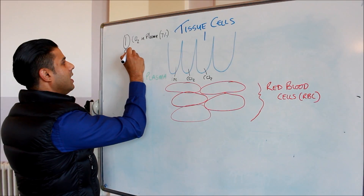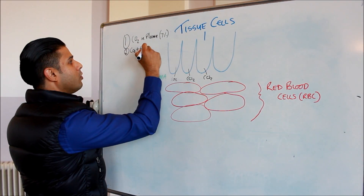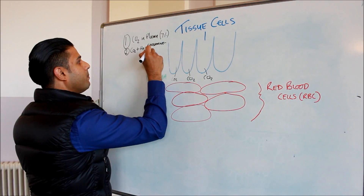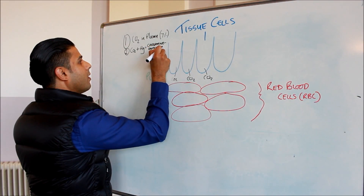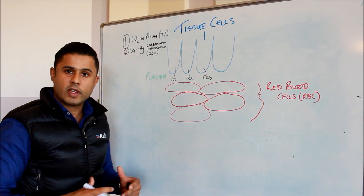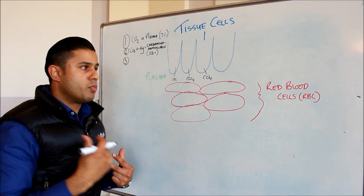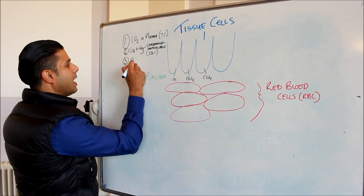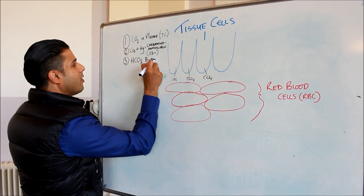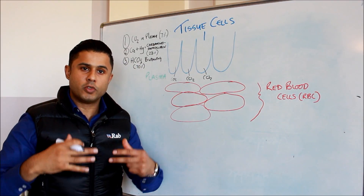The second way is CO2 attaching to hemoglobin to form a molecule called carbaminohemoglobin, and this contributes to approximately 23% of the carbon dioxide transported away from the tissues. By far the most efficient way of getting carbon dioxide into the lungs and breathed out is by using the bicarbonate buffering system — HCO3- — and this contributes to 70% of the CO2 taken away from the tissues towards the lungs.